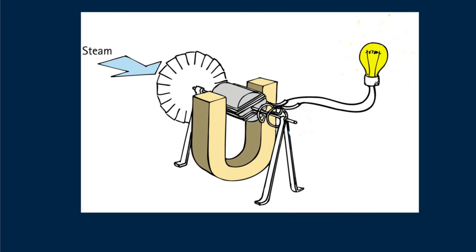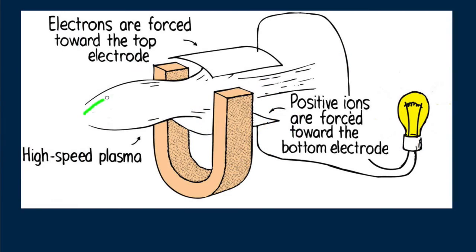That work may involve steam that drives a turbine. And the steam, after all, needs an energy source to convert water to steam. Or high-speed plasma produces electromagnetic induction without the need of coils or wire. Here the plasma requires an energy source. However produced, an energy source is needed for electromagnetic induction.